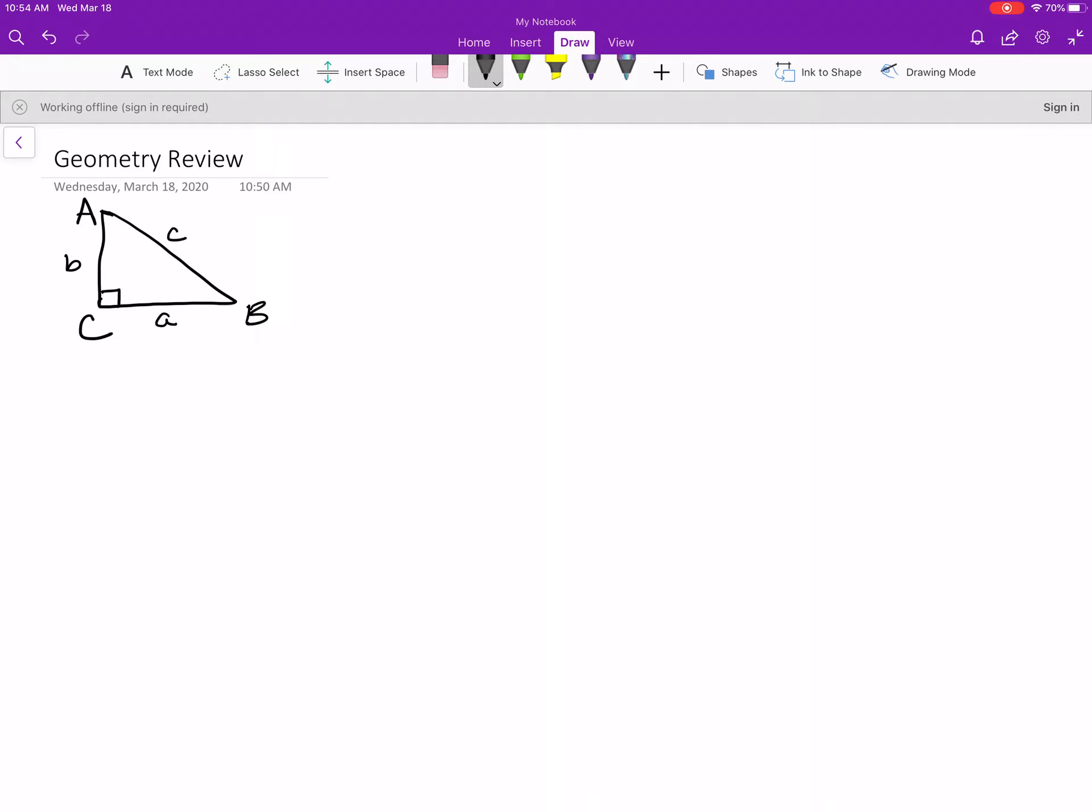We've got the good old Pythagorean theorem that tells us the relationship between the lengths of the sides in a right triangle. It tells us that the short side squared plus the other short side squared equals the long side squared. Sometimes we call these the legs, and then the long side we call the hypotenuse. You can only have a hypotenuse in a right triangle because the hypotenuse is always the side across from the 90 degree angle.